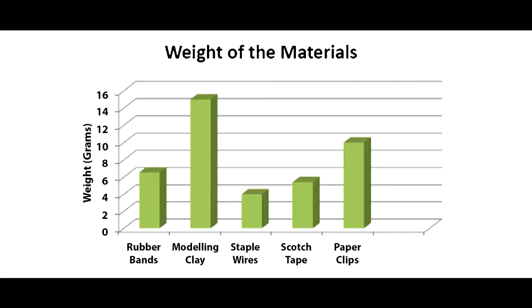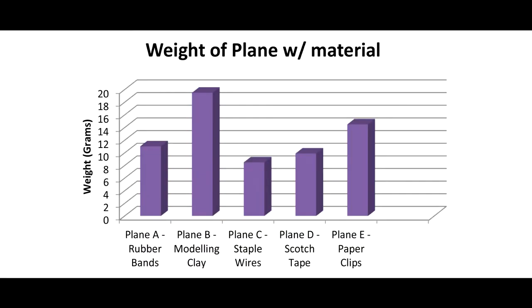The weight of the rubber band is 6.54 grams, the weight of the modeling clay is 15 grams, the weight of the staple wires is 4 grams, the weight of the scotch tape is 5.41 grams, and the weight of the paper clips is 10 grams. The weight of the rubber band plane is 11.04 grams, the weight of the modeling clay plane is 19.5 grams, the weight of the staple wire plane is 8.5 grams, the weight of the scotch tape plane is 9.91 grams, and the weight of the paper clip plane is 14.5 grams.